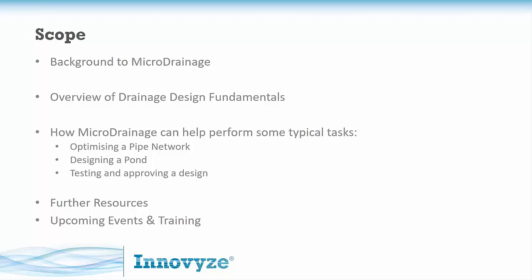We're going to take a detailed look at three different tasks: optimizing and designing a pipe network, designing a pond or storage structure in conjunction with some flow controls, and then finally testing a completed design to the point where we can approve it and generate useful outputs to take forward to construction. We'll also talk about further resources and training courses that cover a lot of the information we'll cover briefly today in a lot more expanded detail.